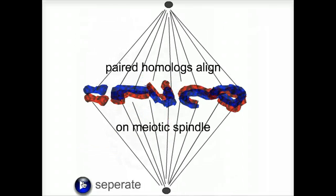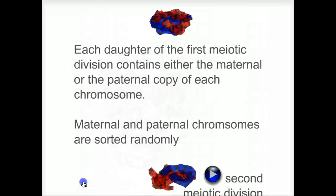The chromosomes align on the meiotic spindle and separate. Each daughter of the first meiotic division contains either the maternal or the paternal copy of each chromosome. Which copy it receives is random.